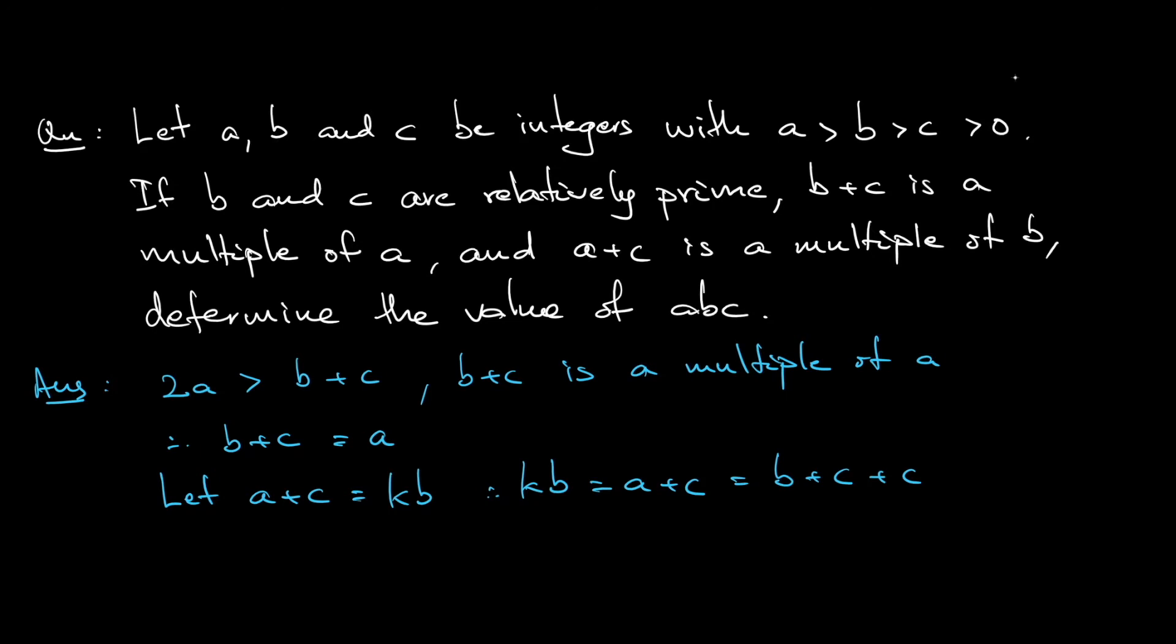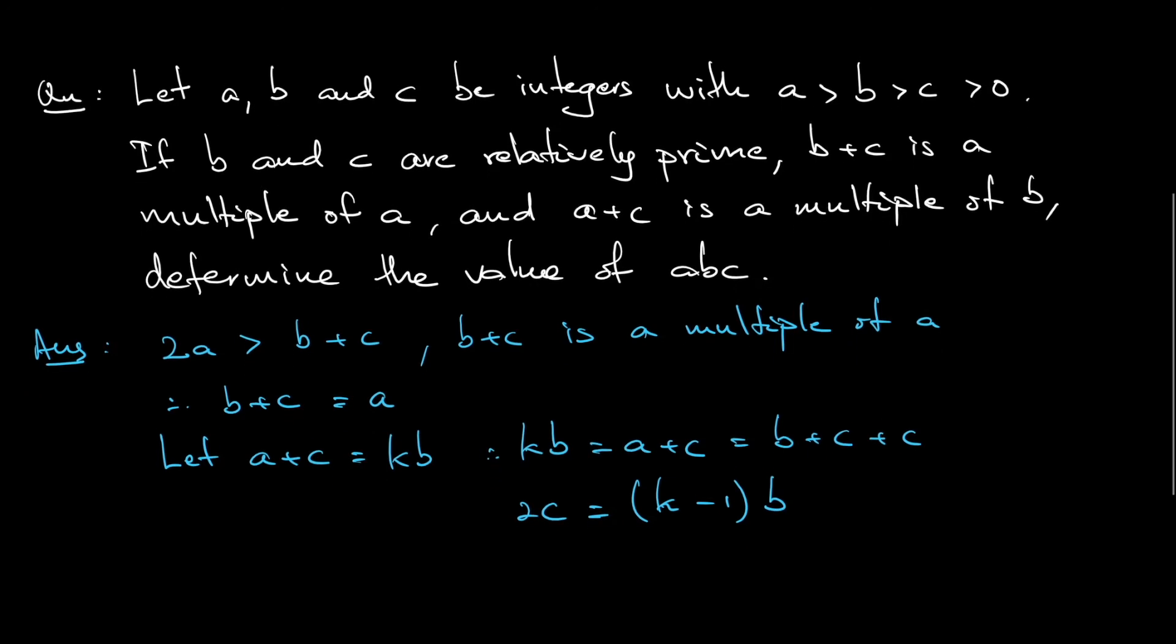That would be 2c, and if I put b to the left-hand side and take b as a factor, k minus 1 multiply by b. But notice that c is smaller than b. Since c is smaller than b, it needs to be equal to 2c. So for it to be possible...